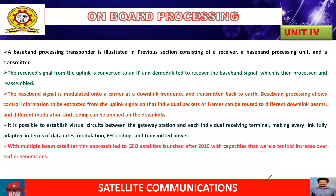Baseband processing allows control of the information to be extracted from the uplink signal so that individual packets and frames are routed to different downlink beams. Generally, baseband processing creates virtual circuits between gateway stations. With multiple beam satellites, GEO satellites initialized around 2010 will increase over earlier generations.